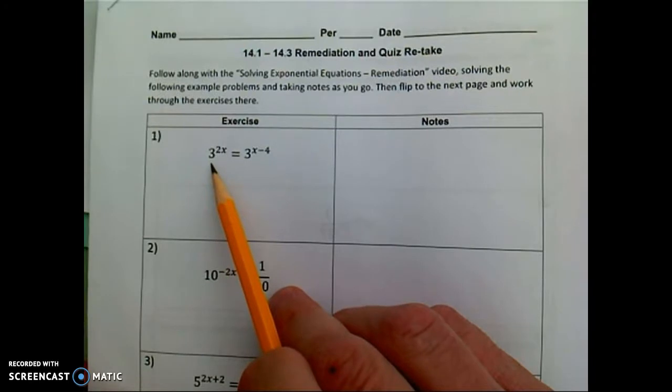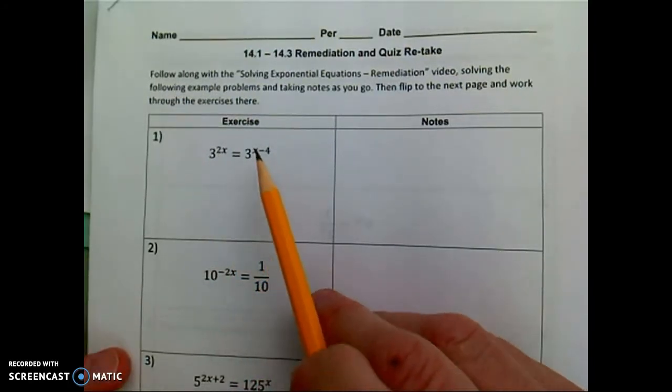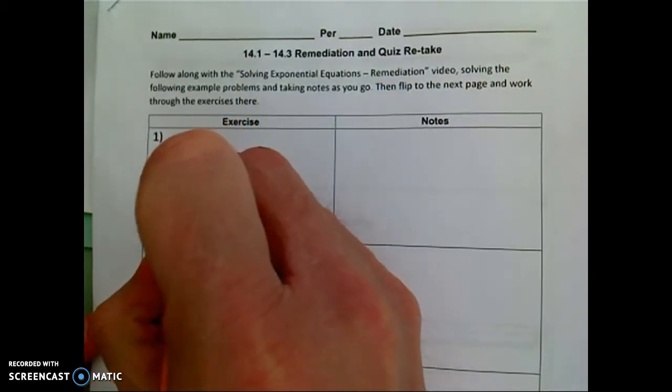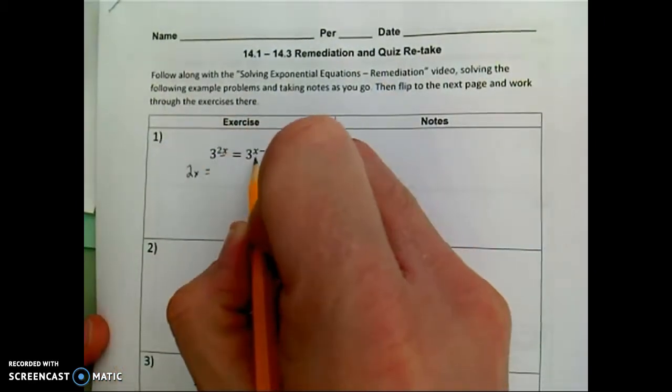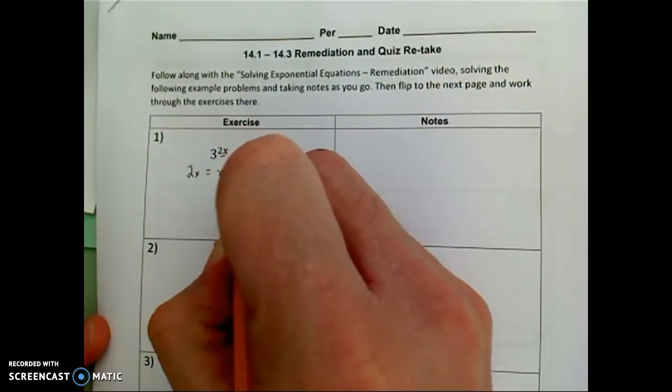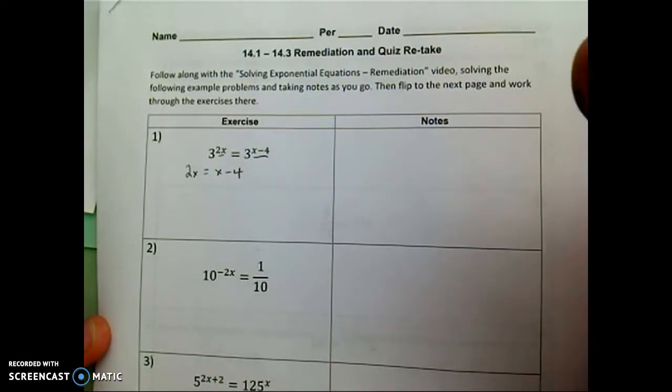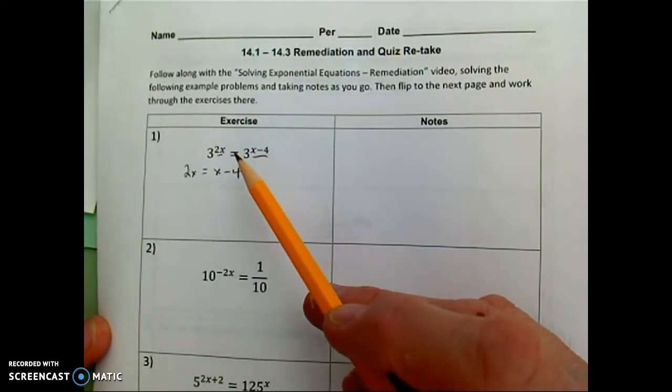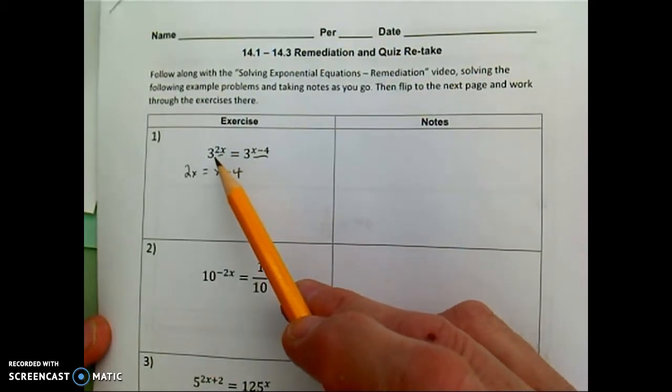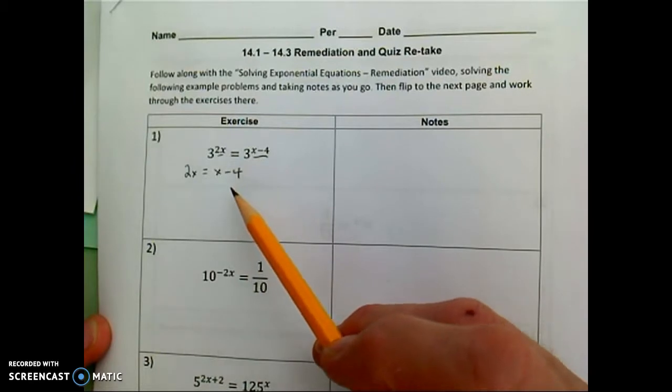First making sure that we have the same base, 3 to the something equals 3 to the something. Then writing the exponents equal to one another. So this exponent 2x equals this exponent x minus 4. So no longer do we have this confusing exponential equation. We've broken this down to what it really means and then recognizing for these two to be equal, the exponents have to be equal. We write that equation and solve it.